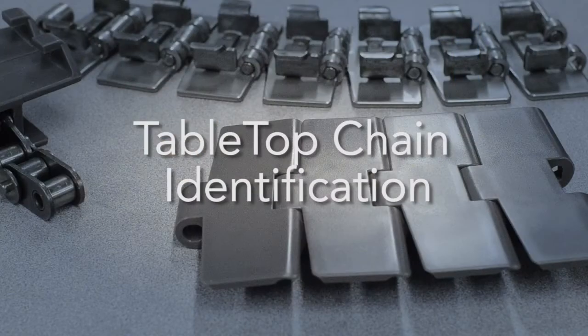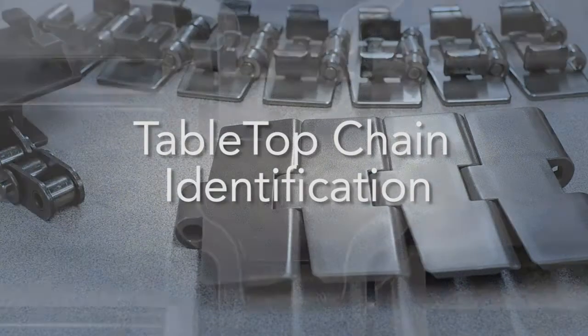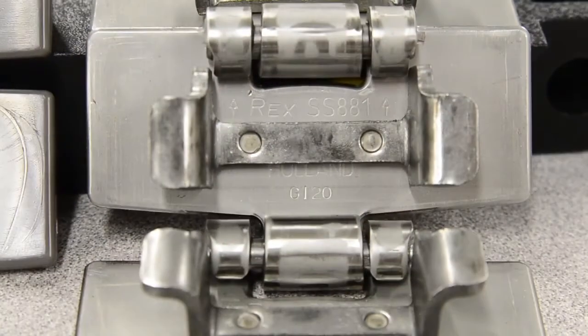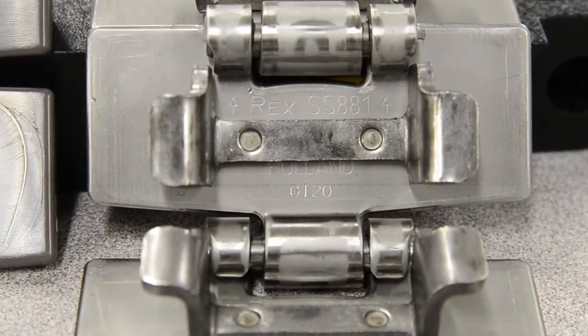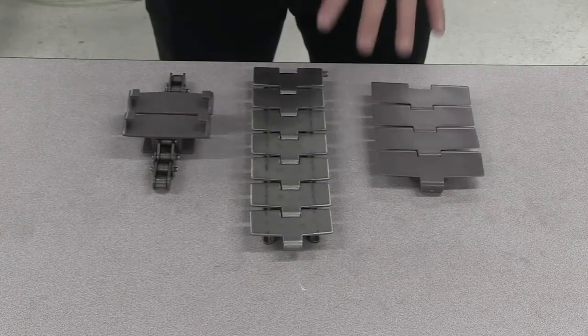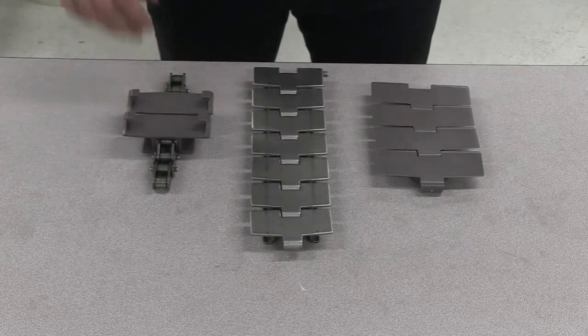In this video, we will identify tabletop chains. The chain series number is the first step to identifying your chain. For tabletop chains, this is a 3 or 4 digit number stamped on the underside of the chain. There are two types of tabletop chains.